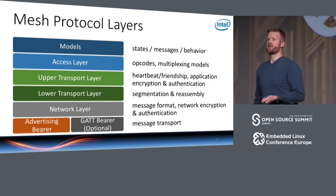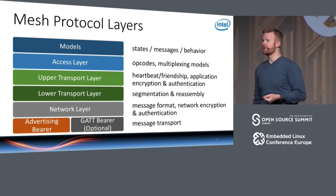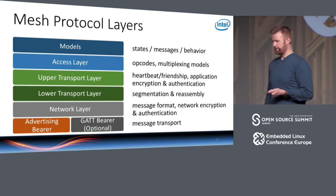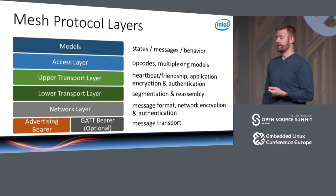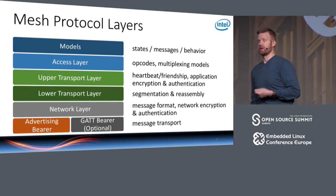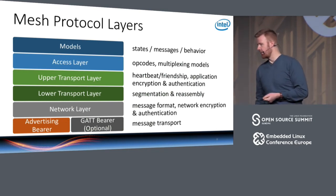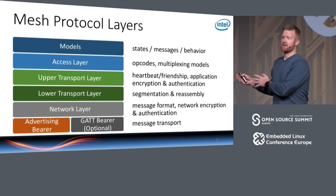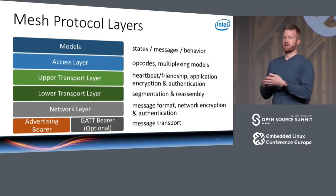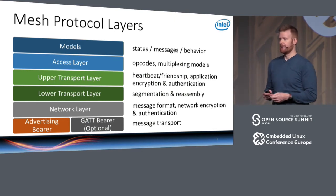The mesh specification comes with a couple of so-called foundation models, which are mandatory for every single node in a mesh network to implement. They are used for configuring the mesh node, giving it keys, and configuring addresses. There's also a separate specification called the mesh model specification released at the same time, which has more specialized models that not every node will implement.